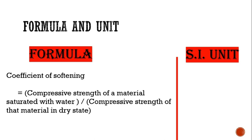So basically here we are comparing two states of a material: the saturated state and the dry state. We are checking the effect of absorption of water on the compressive strength of a material. More is the coefficient of softening, less will be the effect of water absorption on compressive strength. The coefficient of softening is unitless.